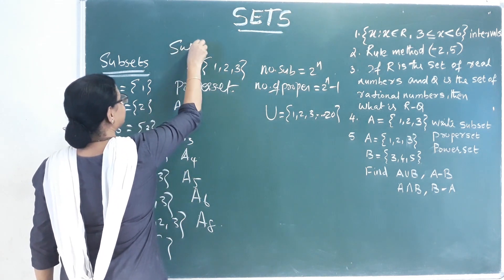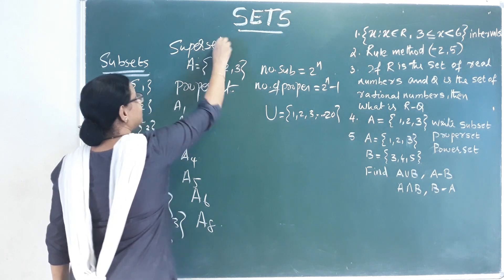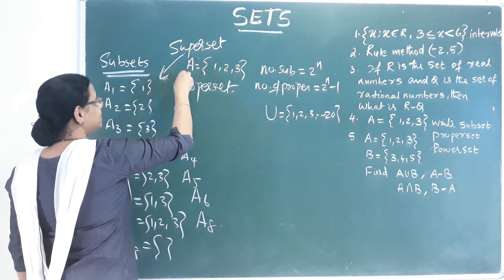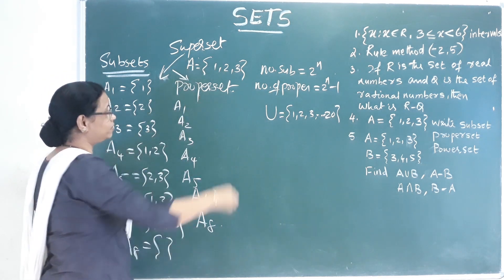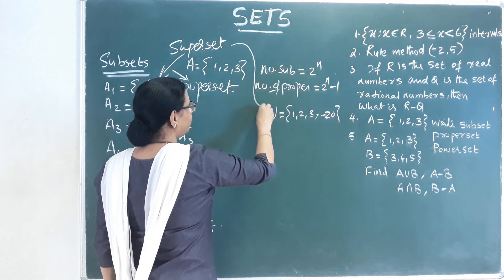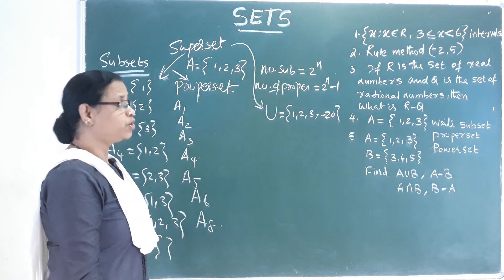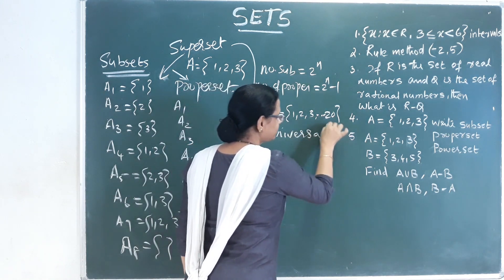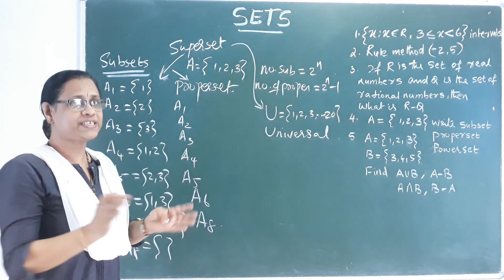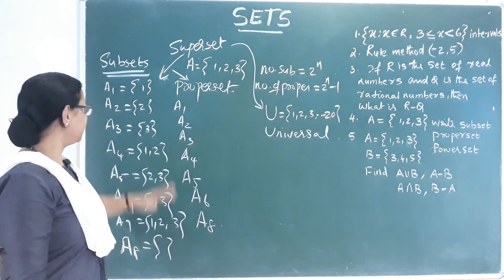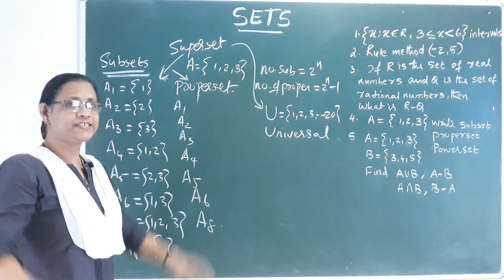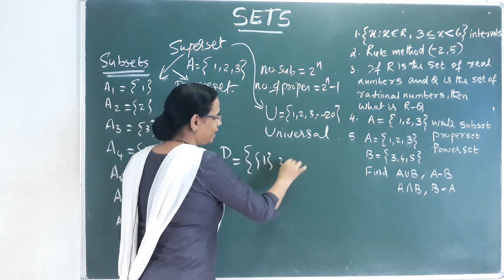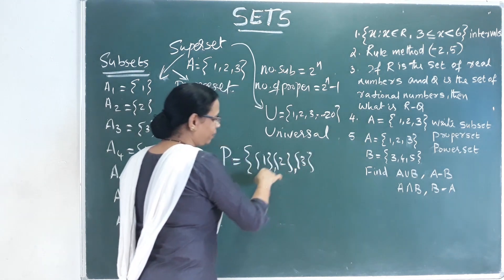What is the subset? The universal set is equal to {1, 2, 3, 10, 20} — there are 3 elements. That means a subset, and we call it superset, because we call it universal set.